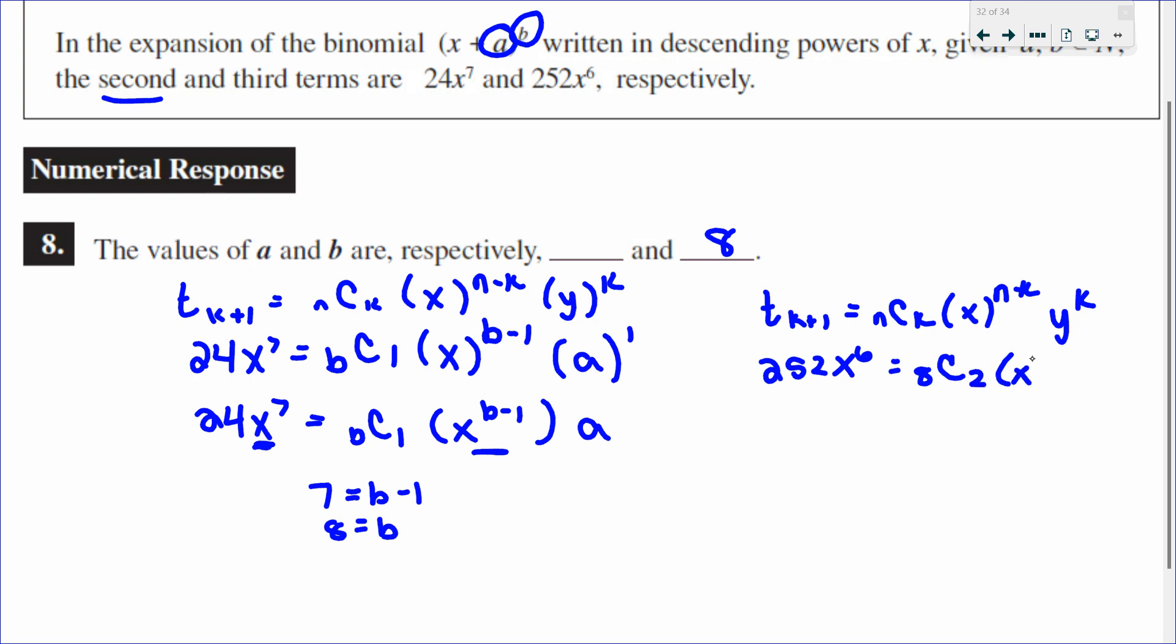This will be my first term to the n minus k, 8 take away 2 is 6. And then my second term, a, to the exponent of k, which we know is 2.